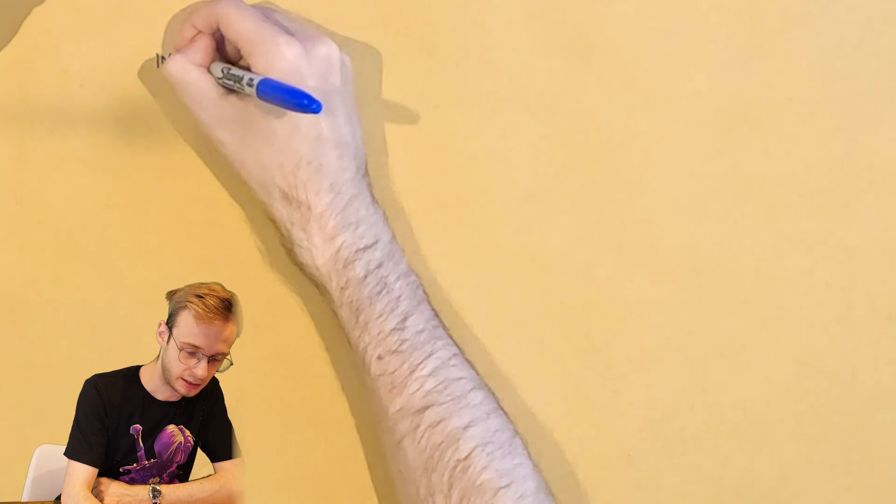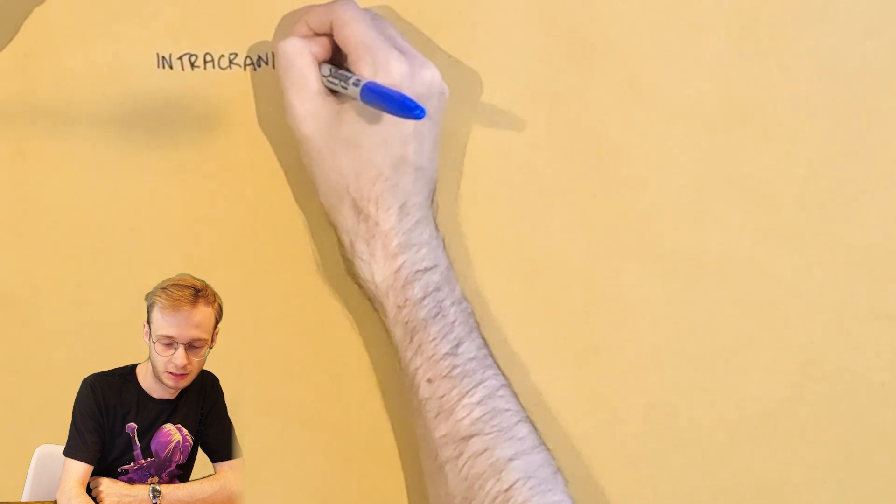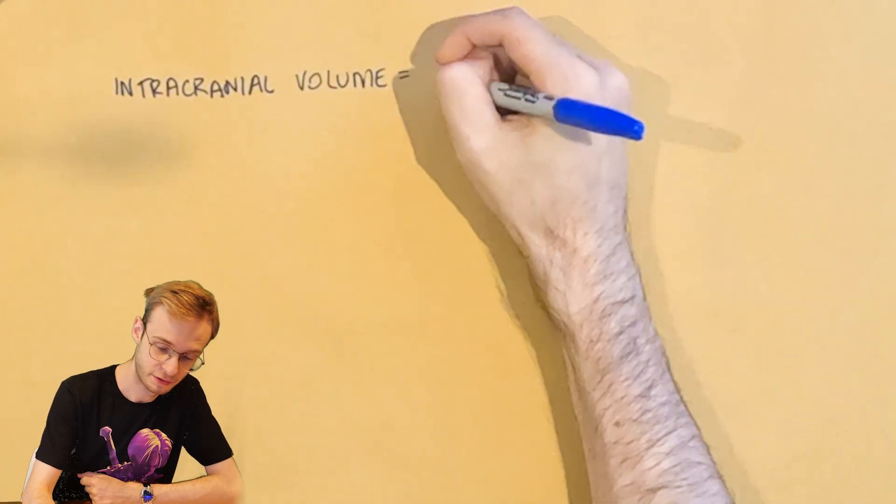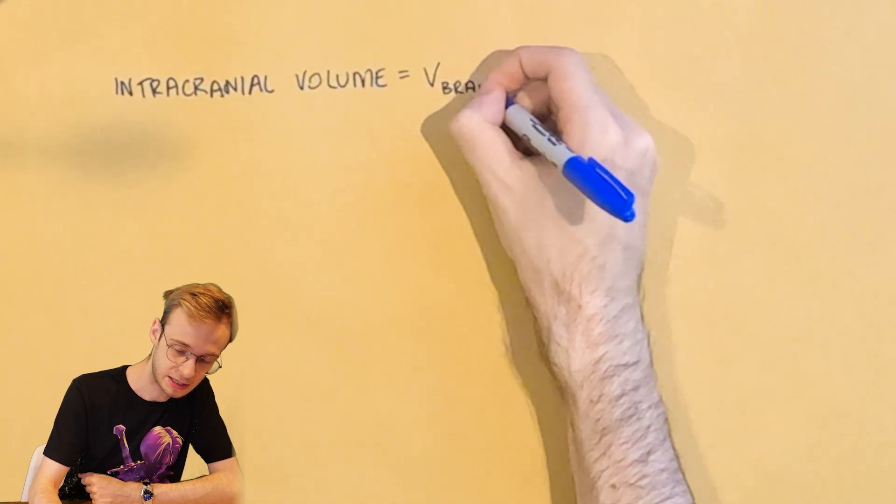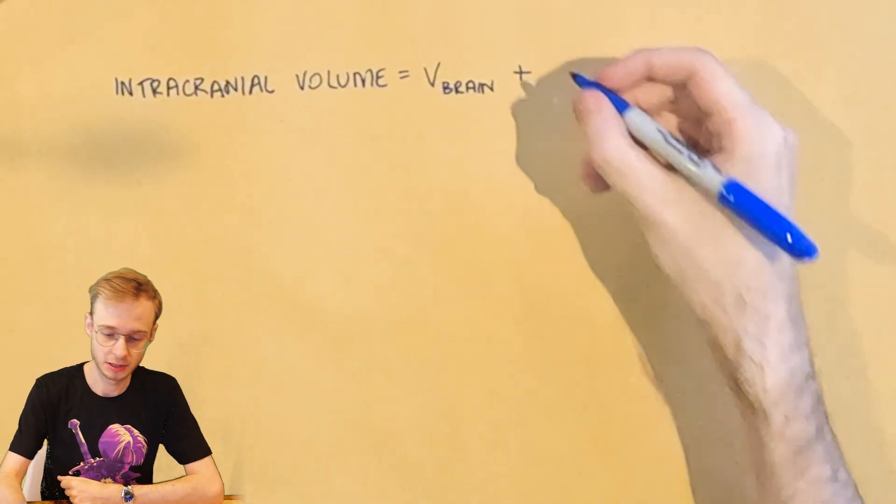So most of the time, what sits inside this fixed box? Well broadly, three things. And they have to exist in some form of equilibrium to keep us alive. So we have intracranial volume broadly consists of three things. That is the brain or the volume of the brain tissue, the parenchyma, and that makes up about 80% of what's inside the skull.